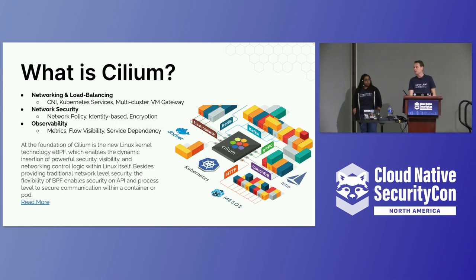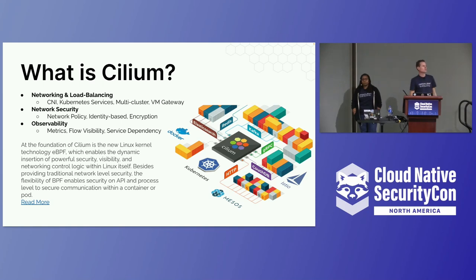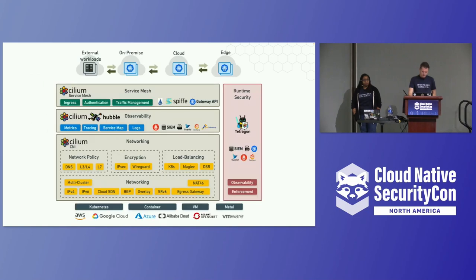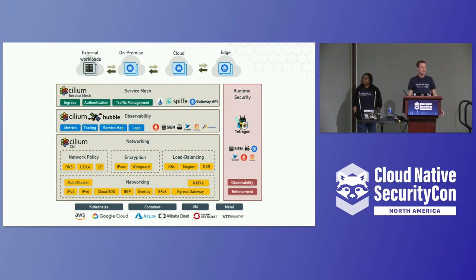Cilium is built on eBPF, but you don't have to be an eBPF engineer to use it — Cilium abstracts that complexity and automatically programs the required eBPF programs based on your configuration. It provides software-defined networking for cloud-native environments including Kubernetes, handling identities instead of IPs. Cilium's features span networking, observability with Hubble, and a sidecar-less service mesh powered by eBPF, providing layer 7 path-based routing and ingress — achieving three to four times improved latency and performance.